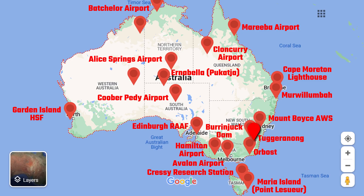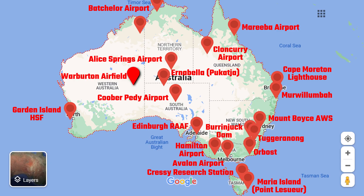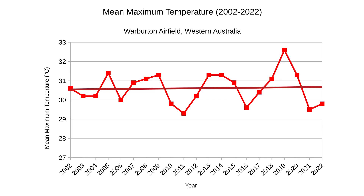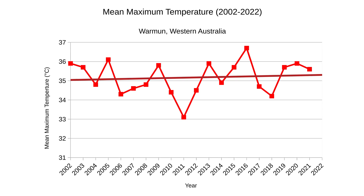Heading over to the ACT, Tuggeranong is the southernmost town centre of Canberra. Looking at the data, it's definitely experienced a downward trend in mean maximum temperatures over the last 20 years. Back in Western Australia, Warburton Airfield is located near an Aboriginal Australian community just south of the Gibson Desert — the data shows it's remained fairly consistently hot, with temperatures trending slightly upwards. Our last location is Warmun, also in Western Australia in the Kimberley region. Its temperatures have been consistently hot and rising by about 0.3 of a degree over two decades.